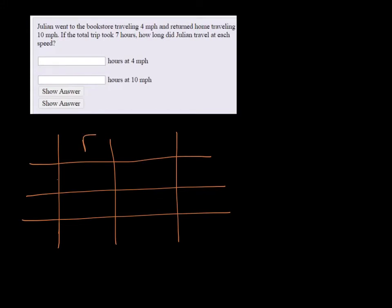So I'm going to draw a table with four rows and four columns. And distance equals rate times time, so I'm going to say rate times time is equal to distance.